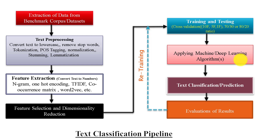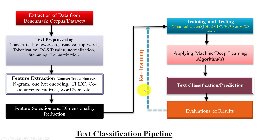The next step is to apply machine learning or deep learning algorithms to get meaningful insights from the data. The output of those algorithms may be a text classification or prediction. Finally, the results of the model can be evaluated. If the results are unsatisfactory, we can retrain the model with some modification.